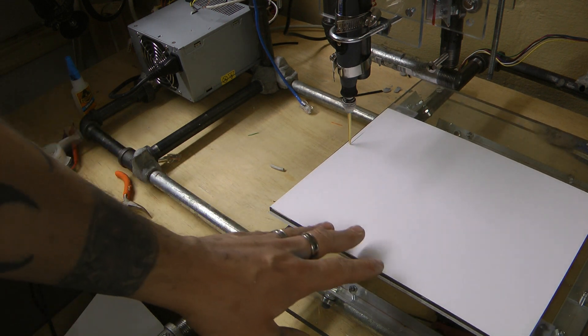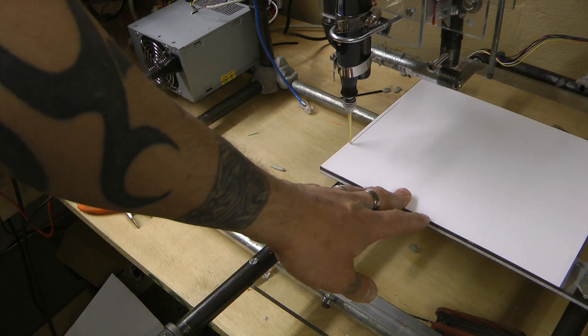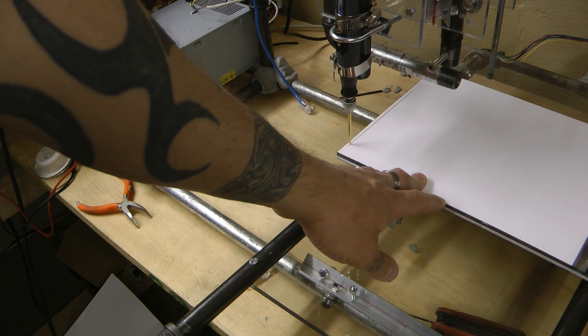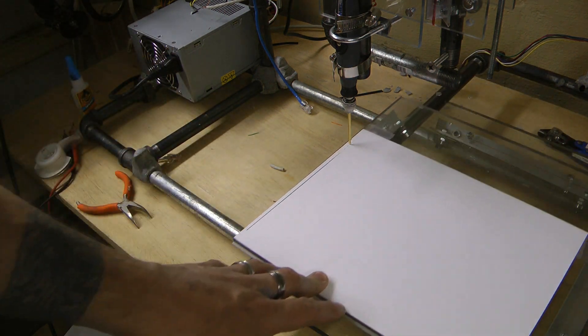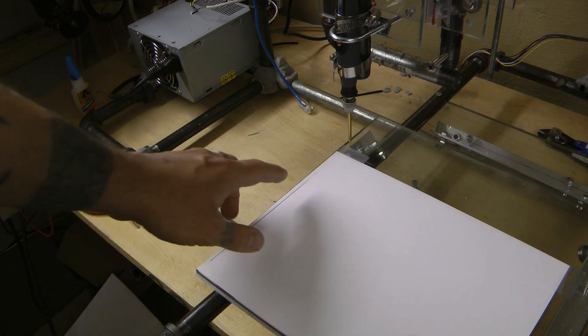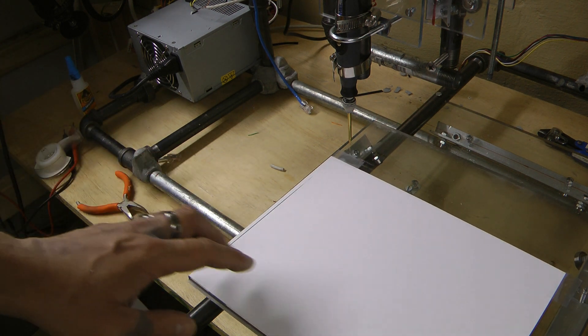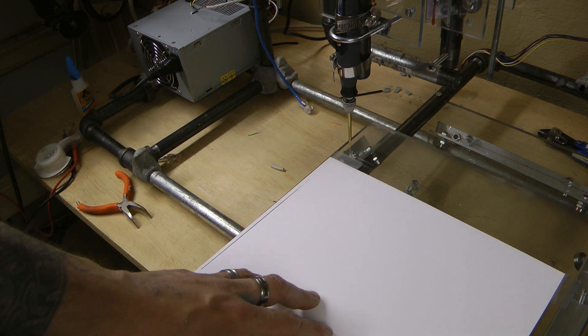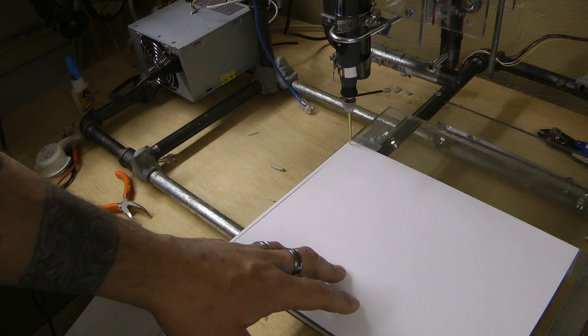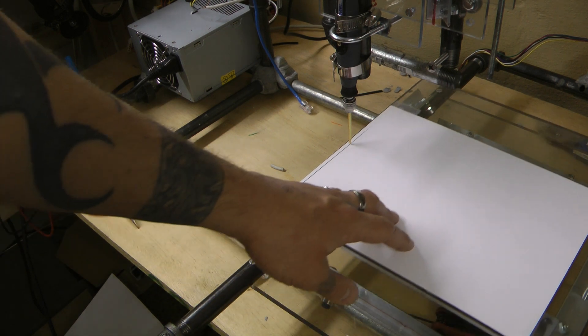So you can see, if I push this, I'm getting a line. But you can see the line stops right there. So that means in that area I would need to raise that platform.